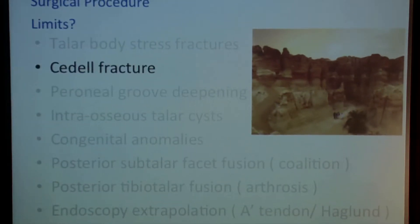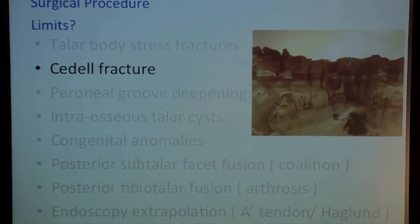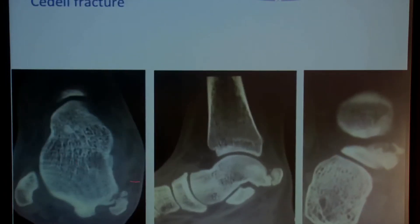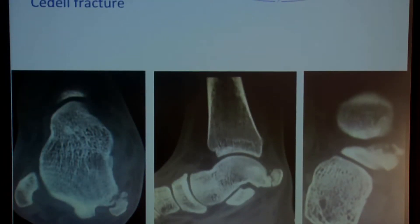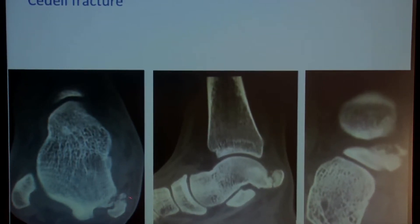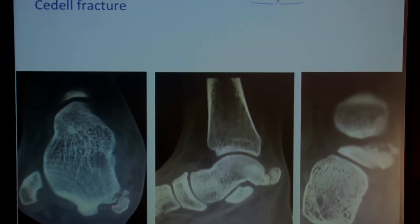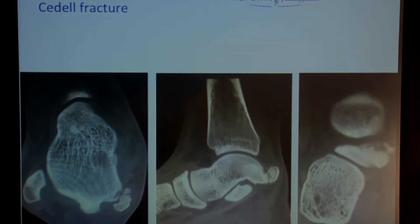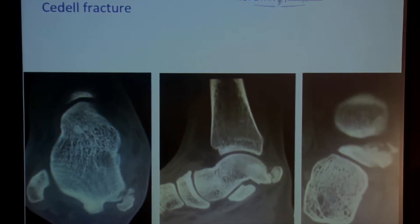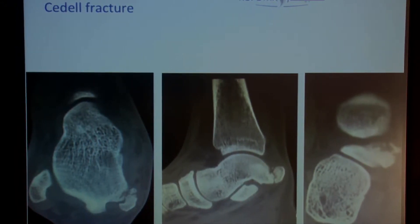Another indication is the Cedel fracture. We are very reluctant to enter the medial part of the posterior region of the ankle because there is the danger zone — medial from the flexor hallucis longus is the neurovascular bundle. If you open this up, you go from a broadened to a very specific narrow area that can be tricky during surgery.